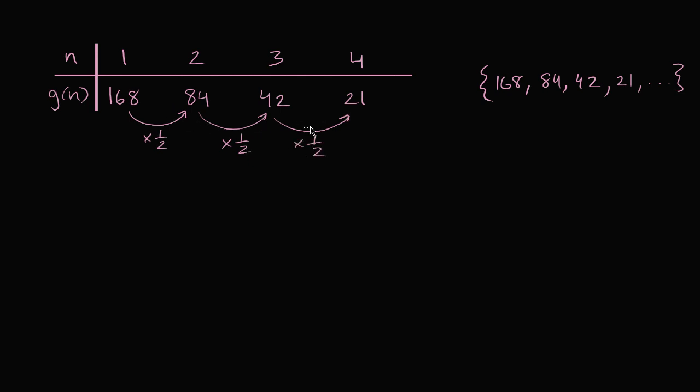So this right over here is a geometric series. We're starting at a term, and every successive term is the previous term times what's often called the common ratio, times 1 half.